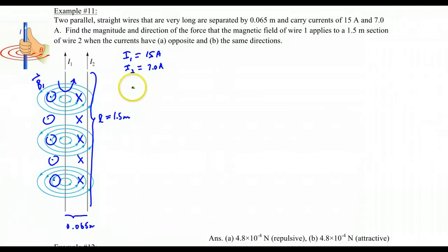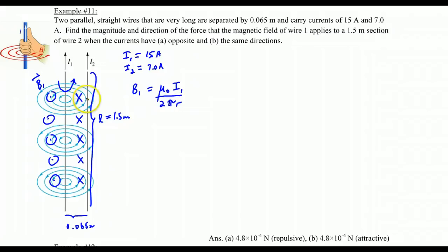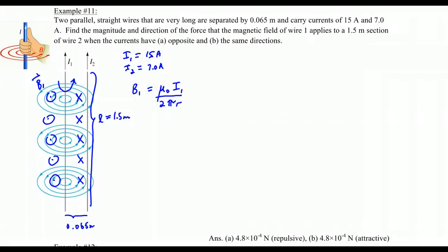The magnetic field strength is defined as B = μ₀I₁ / (2πr), where r is the distance from the wire. So if you go to the location of wire 2, r equals 0.065 meters, but if you go further out, r will be larger and you'll have a weaker magnetic field.